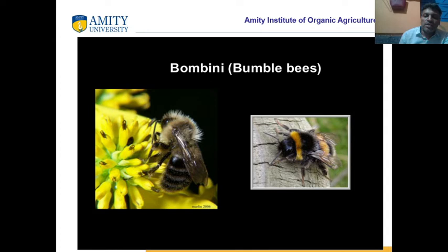Another bee is called bumble bees. They have a short life span compared to honey bees. Honey bees have 120 to 150 days life span, while bumble bees have only 28 days life span.